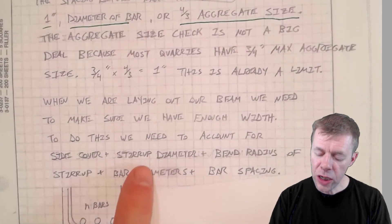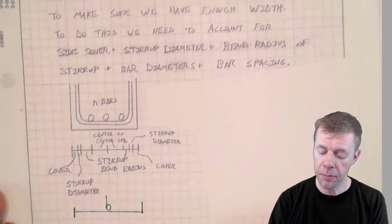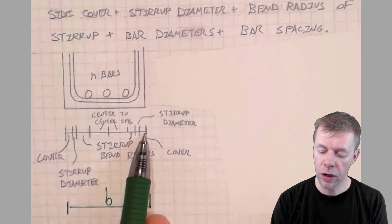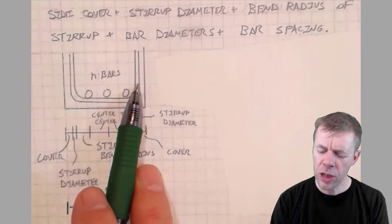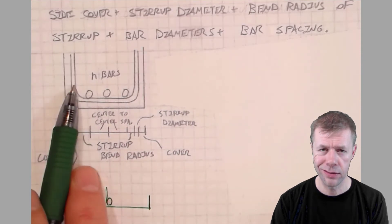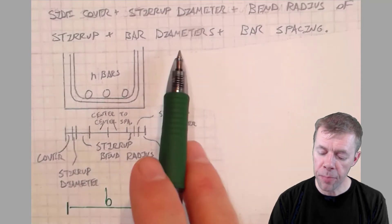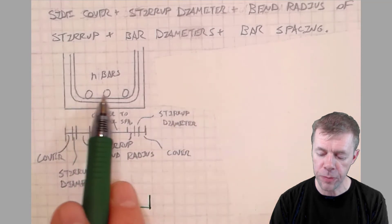To do this, we need to account for the side cover. That's the cover on the side of the beam. We have side cover here and side cover here. The stirrup diameter. We have a stirrup diameter here and stirrup diameter here. Something called the stirrup bend radius. And then something called the bar diameters. And then we have our bar spacing.